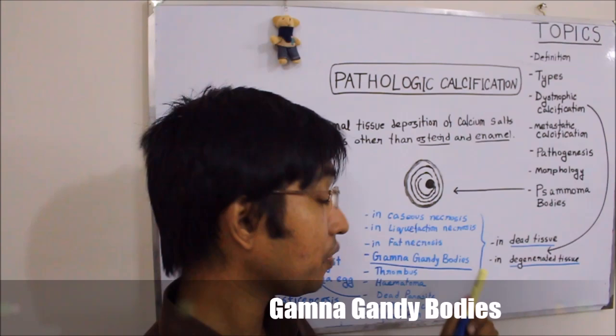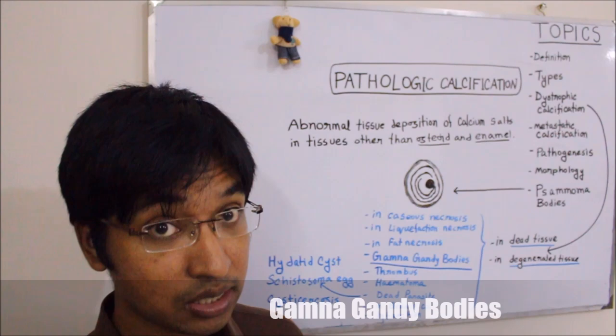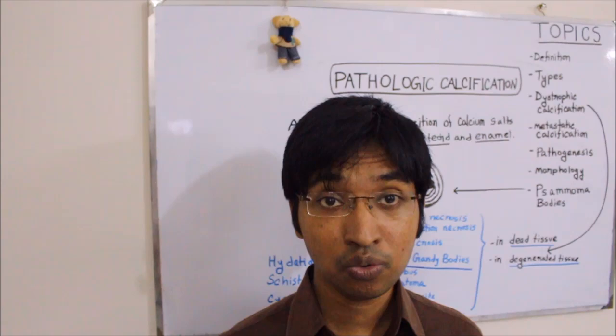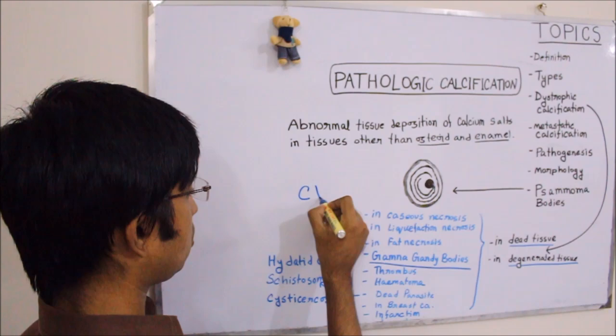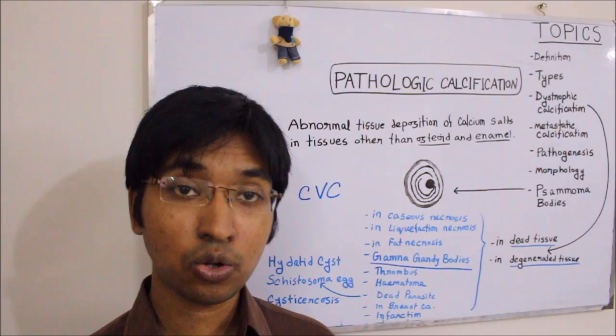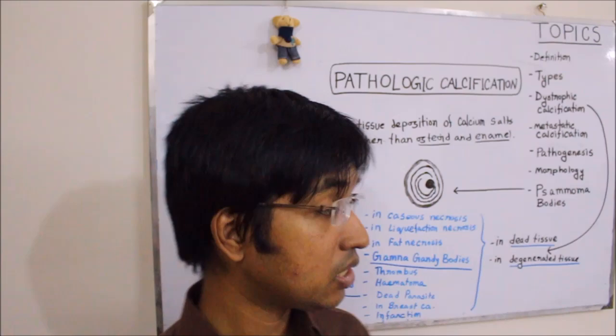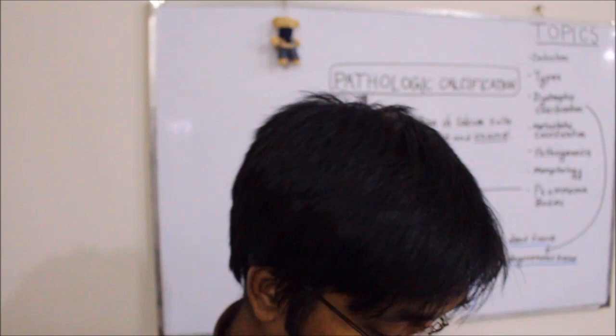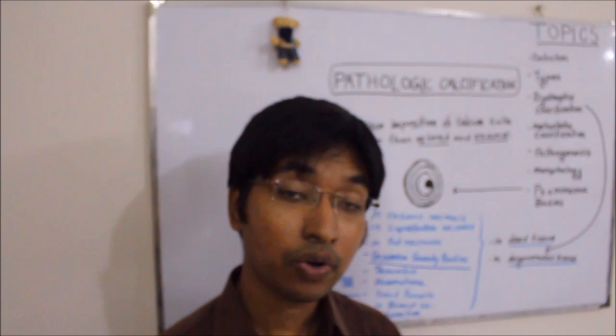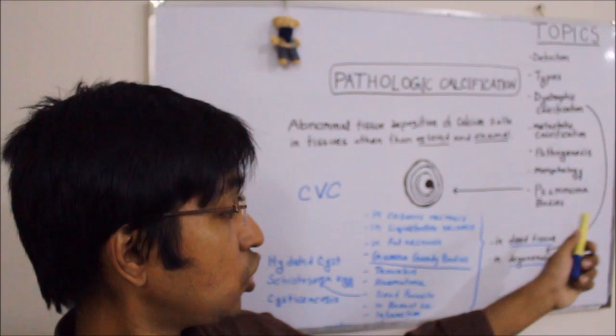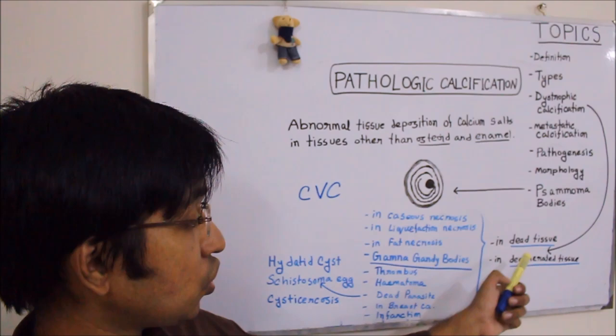Here you can see I have written Gamna-Gandy bodies. What are Gamna-Gandy bodies? These are seen in the spleen when there is chronic venous congestion, also known as CVC, and they are composed of calcium along with hemosiderin and fibrosis. That is Gamna-Gandy bodies — they contain calcium and along with calcium there is also hemosiderin and fibrous tissue, and that is another example of dystrophic calcification occurring in dead tissue.